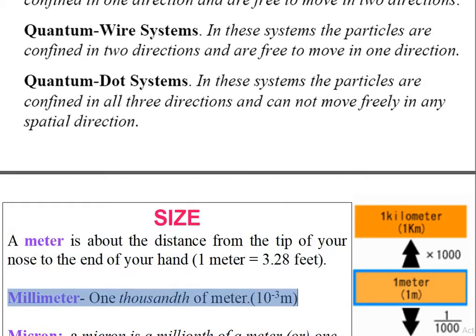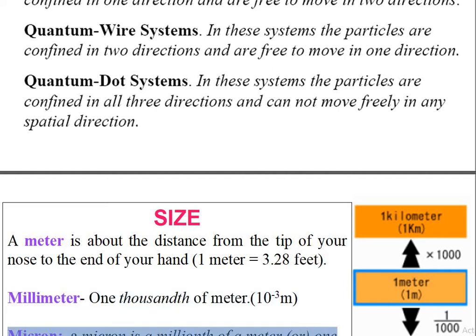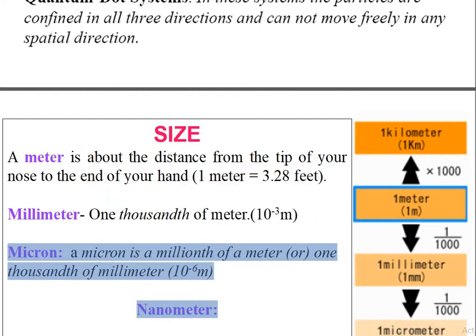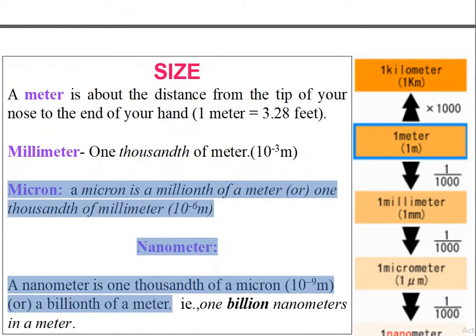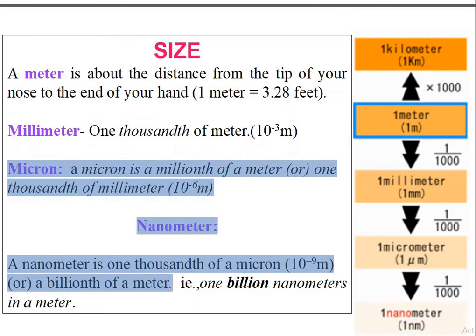A millimeter is a 1,000th of a meter, or 10⁻³ m. A micron is a millionth of a meter, or a 1,000th of a millimeter, 10⁻⁶ m.